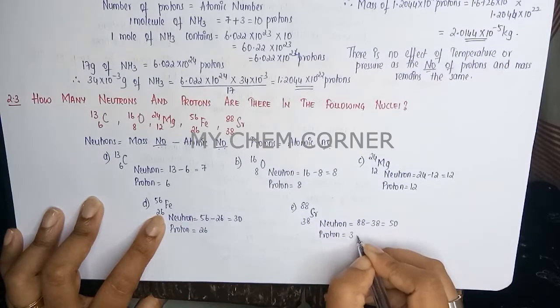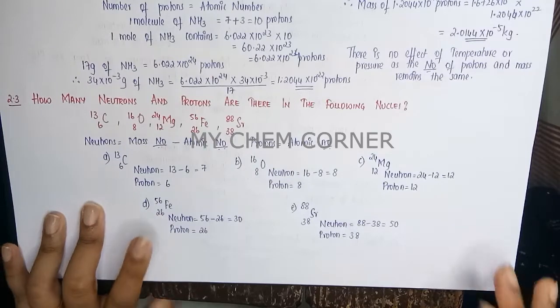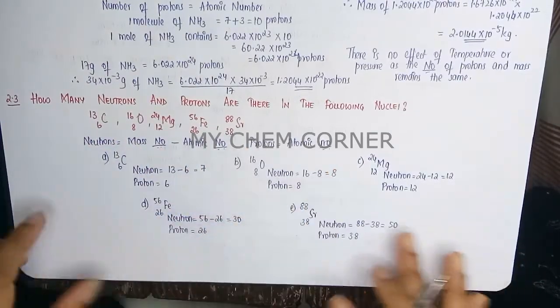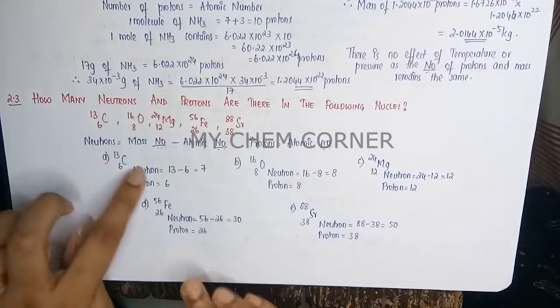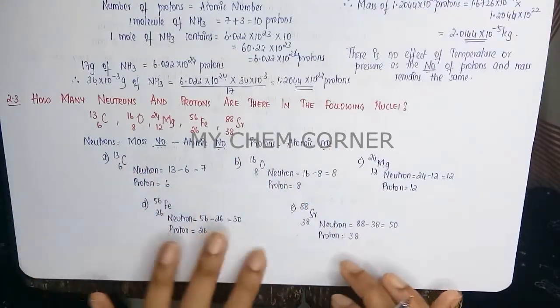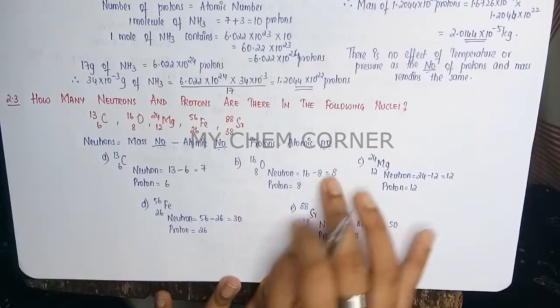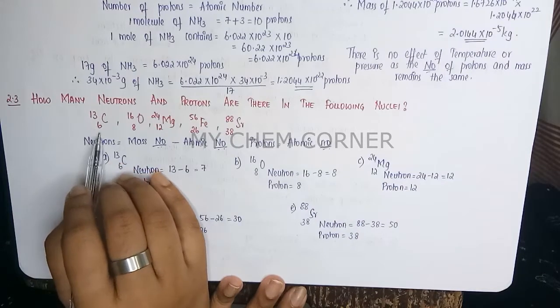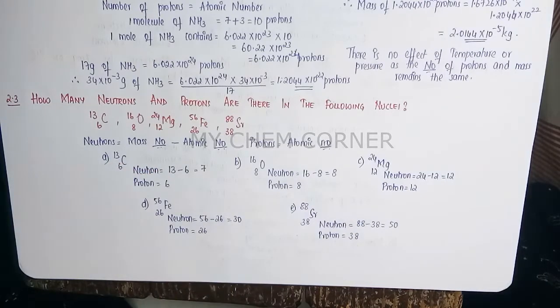So this way, if you know what is the formula for proton and neutron from the given information, it is easy for you to calculate each of the values, provided you are able to identify which is the atomic mass and which is the atomic number.